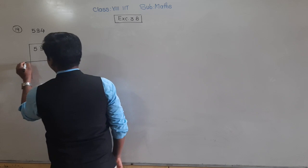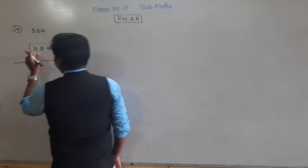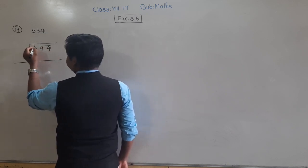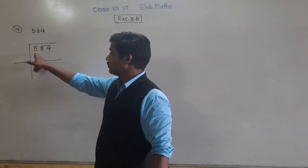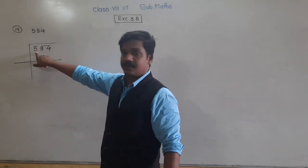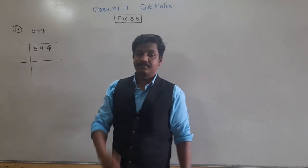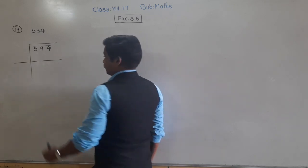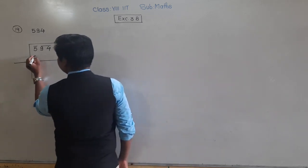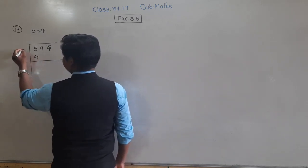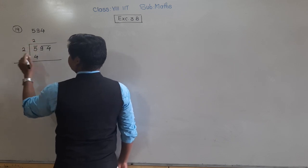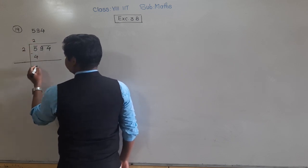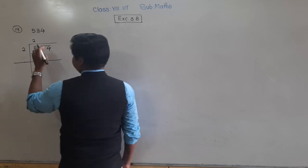As usual, form groups. In the first group there is 5. The smaller perfect square than 5 is 4, and 4 is the square of 2. So 2 twos are 4, and 5 minus 4 is 1. Then bring the second group down.